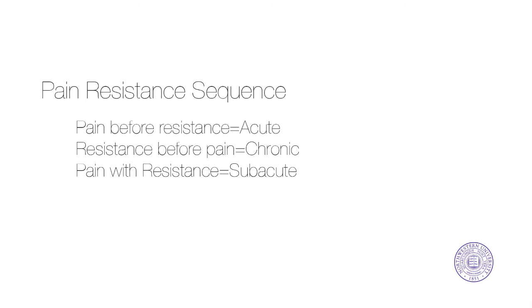The pain-resistance sequence is as follows: pain before resistance indicates an acute condition, and resistance before pain indicates a chronic condition.